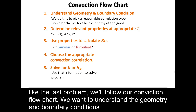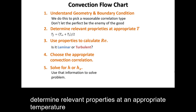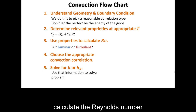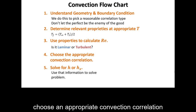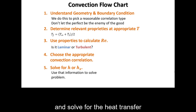Like the last problem, we'll follow our convection flow chart. We want to understand the geometry and boundary conditions, determine relevant properties at an appropriate temperature, calculate the Reynolds number, choose an appropriate convection correlation, and solve for the heat transfer coefficient.